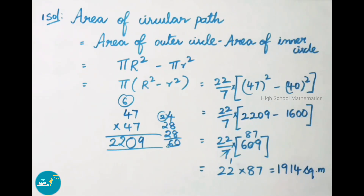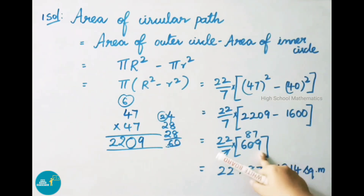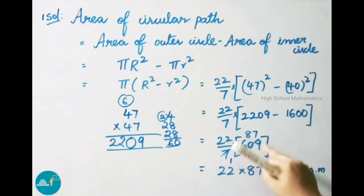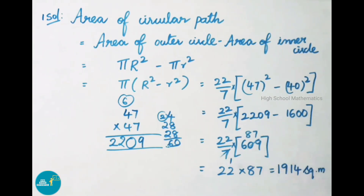Now we do cancellation. 7 table: 7 × 1 = 7; 7 × 8 = 56; 60 − 56 = 4 carry; number becomes 49; 7 × 7 = 49. So 609 ÷ 7 = 87. That equals 22 × 87.